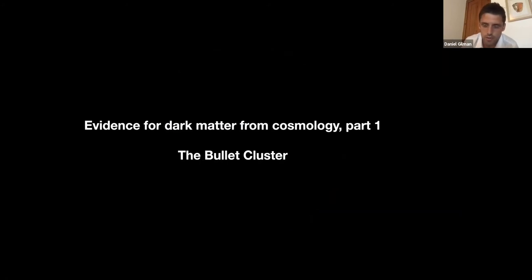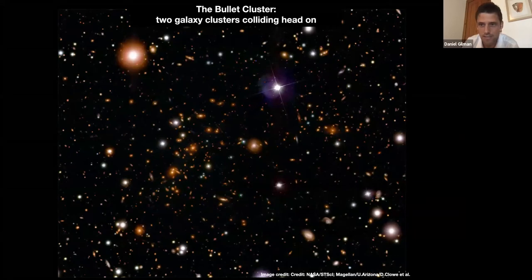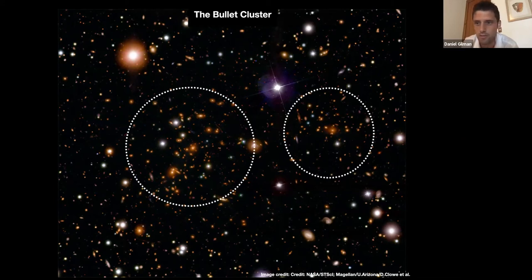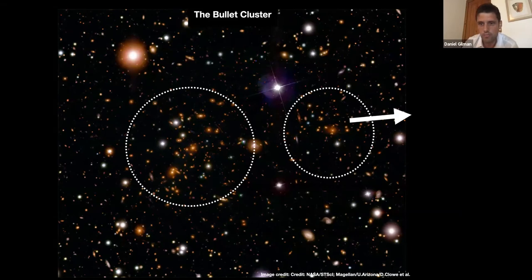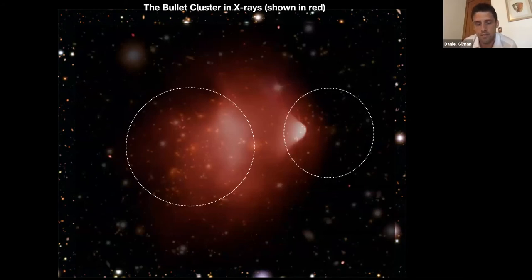To get started, I want to try to convince everyone that dark matter actually exists. A good place to start, especially because we want to talk about lensing, is with something called the bullet cluster. The bullet cluster is two clusters of galaxies that are colliding head on. This is just a regular exposure of the bullet cluster — I'm circling the two clusters: there's a small one on the right and a larger one on the left. The one on the right has just plowed through the one on the left; it's moving to the right very fast.